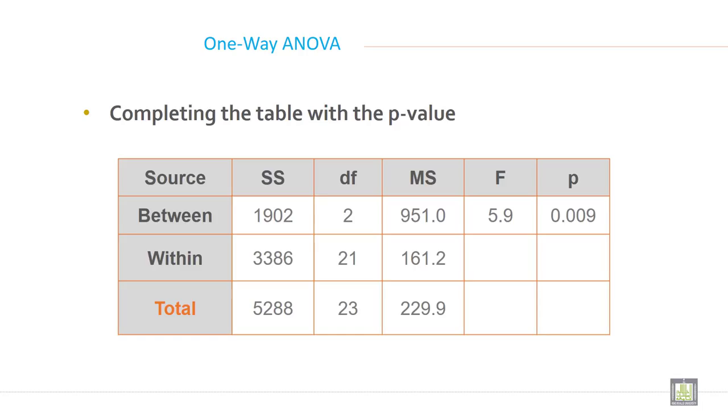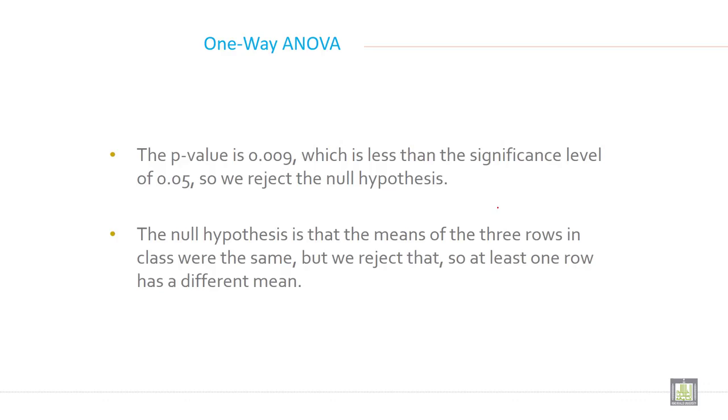So write all the values in the table here. P-value 0.009. The p-value is 0.009, which is less than the significance level of 0.05. So we reject the null hypothesis.